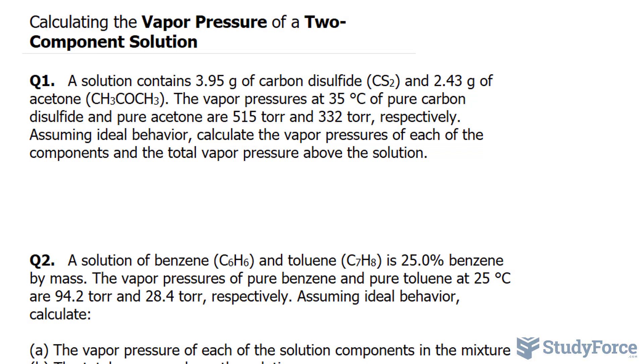To do this problem successfully, we'll need to use Raoul's Law to calculate the partial pressures of each component. Raoul's Law requires that we find the mole fraction of the two components separately, then use the mole fractions found for each chemical along with the pressures given in the question to find their partial pressures. Once we find these pressures, we sum them up to get the total.